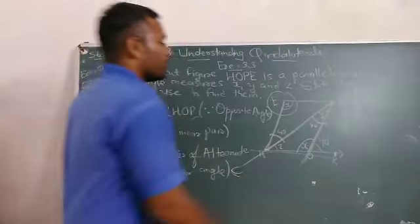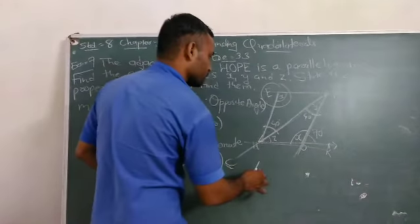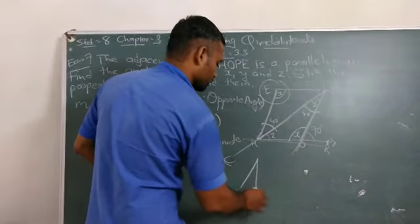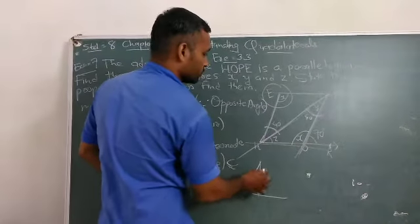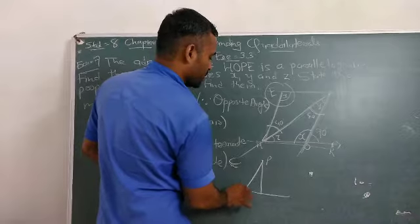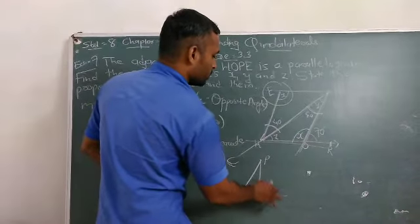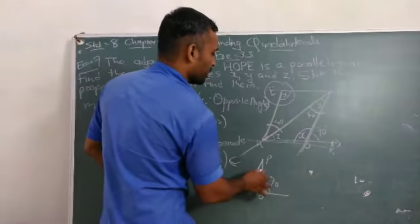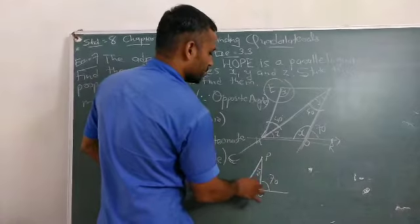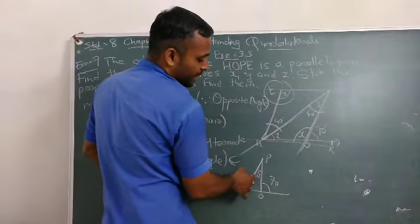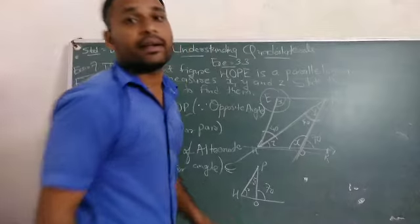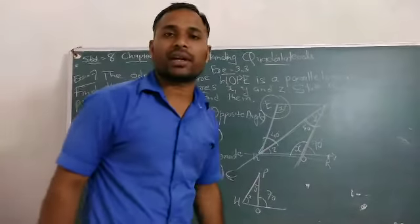For this triangle THO: this is 70, this is Y, and this is Z. Y and Z are interior angles of 70.